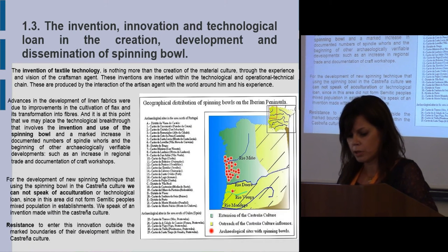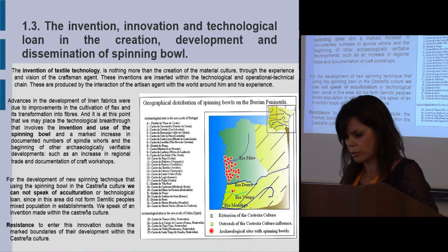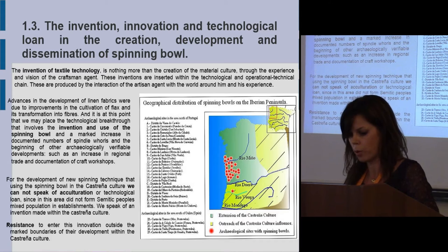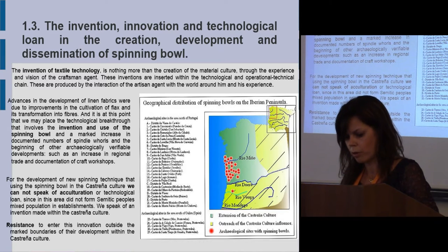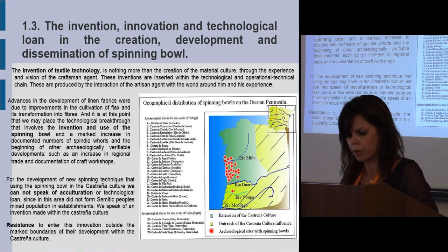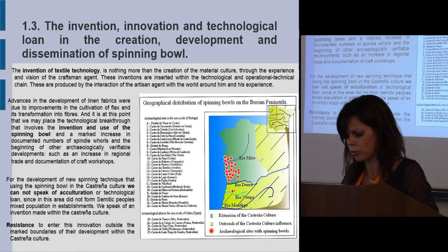The categories of invention, innovation, and technological learning — their integration, development, and diffusion — are illustrated through the spinning board. The invention of the spinning board appears to occur in the Levantine area, in the Calculated region, from where it is transmitted through the innovation process towards the Balkans and Egypt.